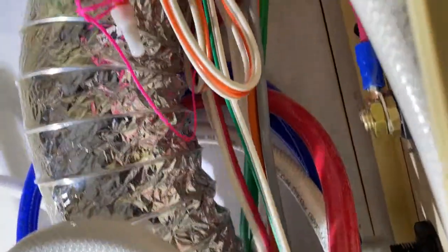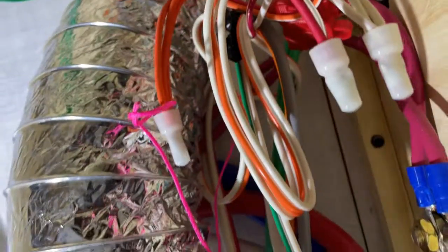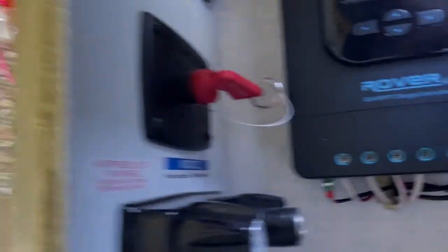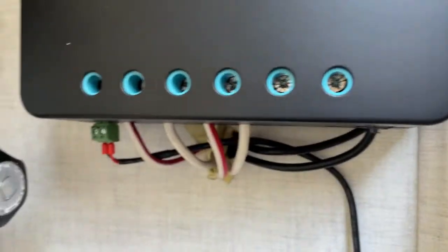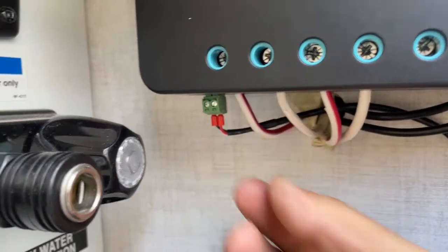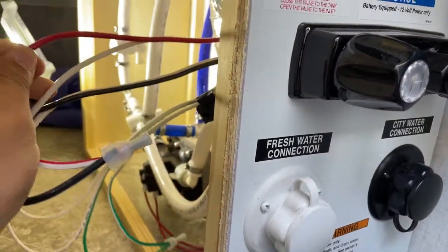The wiring you're primarily looking for though is these reds and these whites. And where those run, the way you can trace those down is on this side where it comes through, you can literally grab those wires when they're connected to the stock controller and just pull on them. And as you're pulling on them, they're going to pull back through up here kind of where that vent runs.